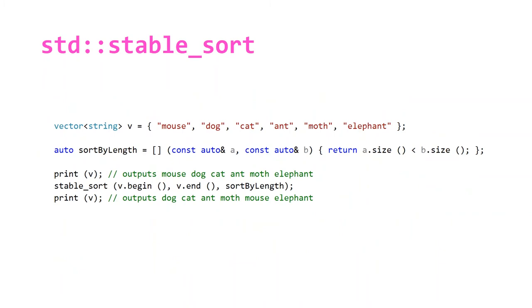If we go back to the same example and all we do is change sort to stable_sort, that's the only difference from the last example. We'll notice that the output after we sort is maintaining the order of all the elements with the same length. Because dog, cat, and ant all have length three, it maintains that order after we sort. That is what stable sort is for.